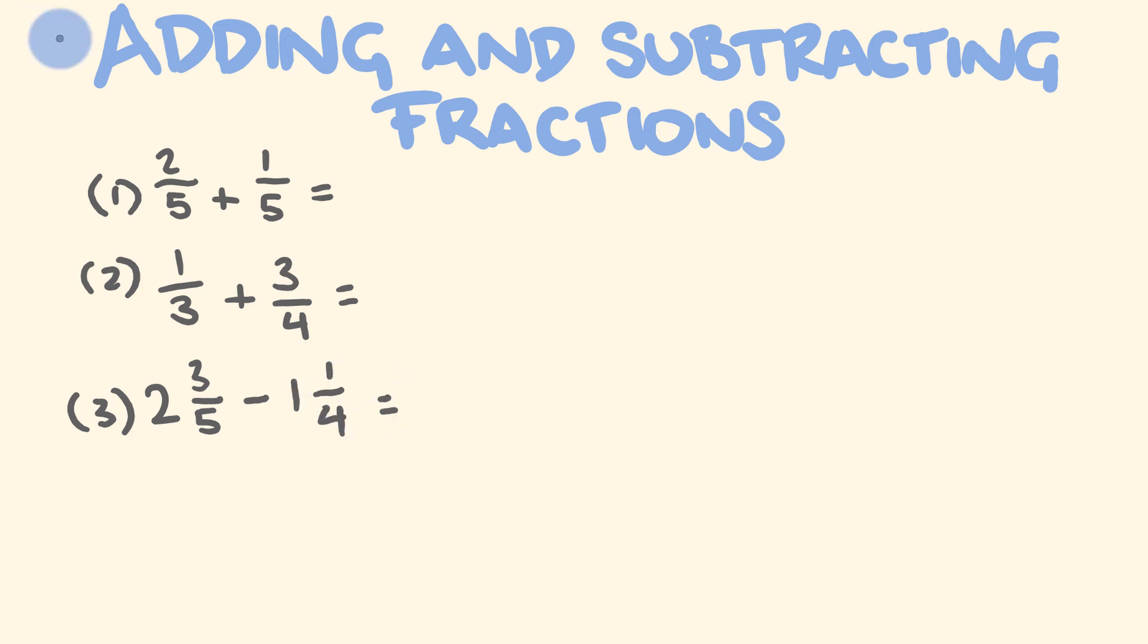Alright, give these a go. So 2 fifths plus 1 fifth. Well, we're going to keep the bottom number the same here. They're going to stay in fifths. And 2 plus 1 is equal to 3. They're really simple. So that's right. Have you got that answer? That's correct.